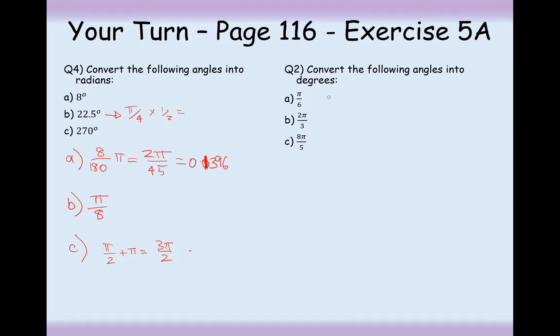Part 2 here, well if I know that π is 180, I just need to do 180 divided by 6, and that's 30. This one here, two-thirds of 180 is 120, and eight-fifths of 180, I think I'll do that one on my calculator, eight-fifths of 180 is 288 degrees. So there we are, those are the answers to these questions here then.